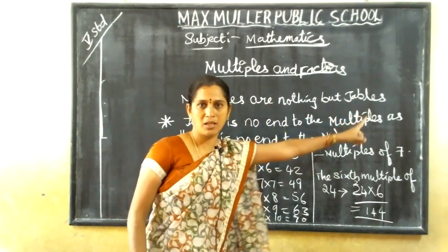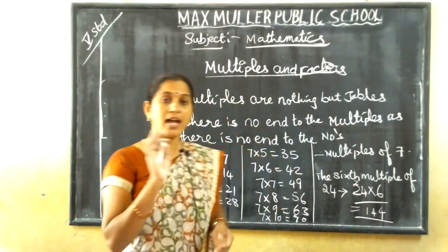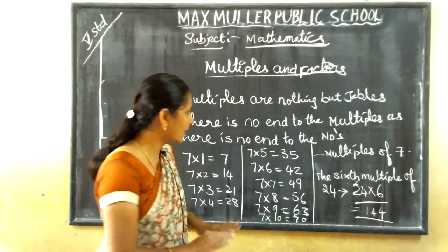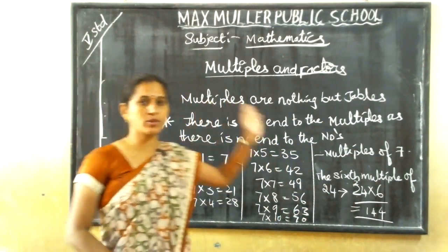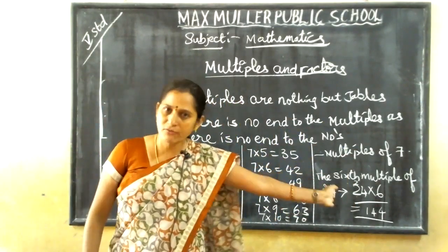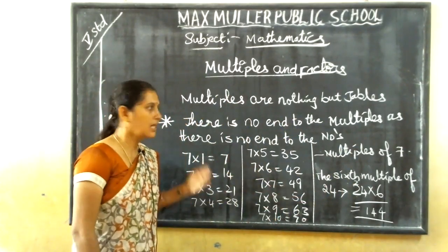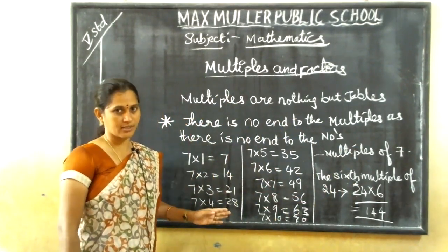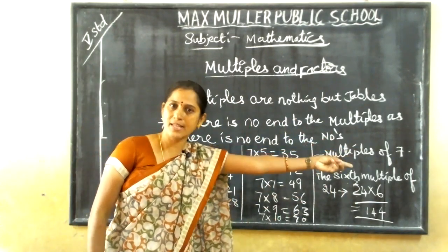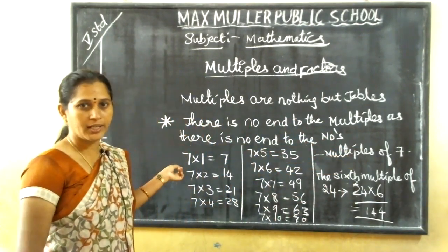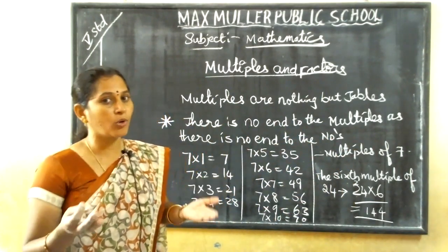Once again: multiples are nothing but tables. There is no end to the multiples as there is no end to the numbers. When the numbers are there, multiples also will be there. Whatever number they give, we have to write the multiples of that number — means multiplying the numbers. Multiples of seven means the seven table only.